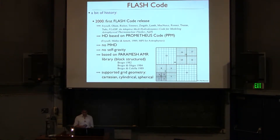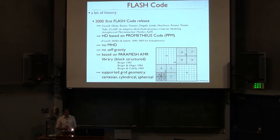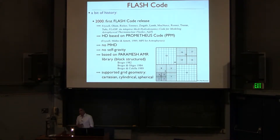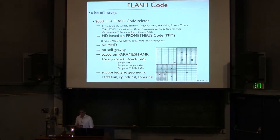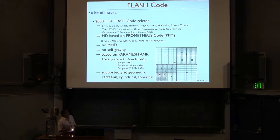Some of the code wasn't built from scratch. For instance, the hydrodynamic solver, the PPM — the piecewise parabolic method, a second-order solver for hydrodynamics — was already developed for a code called Prometheus, developed in collaboration with German groups at the Max Planck Institute for Astrophysics in Garching, so it also has a link to Germany where I'm from.